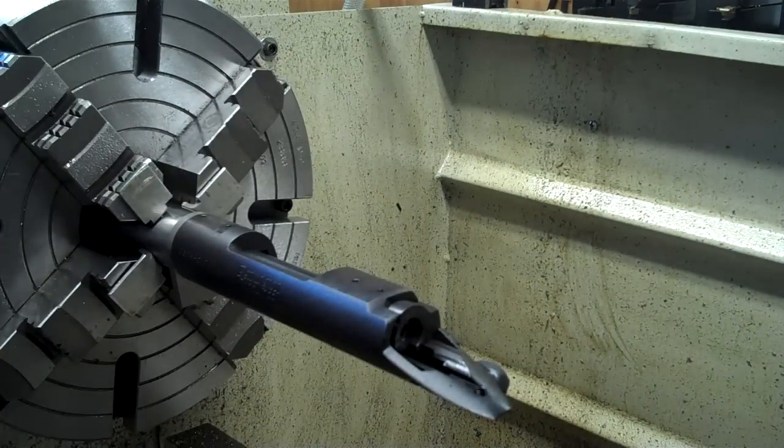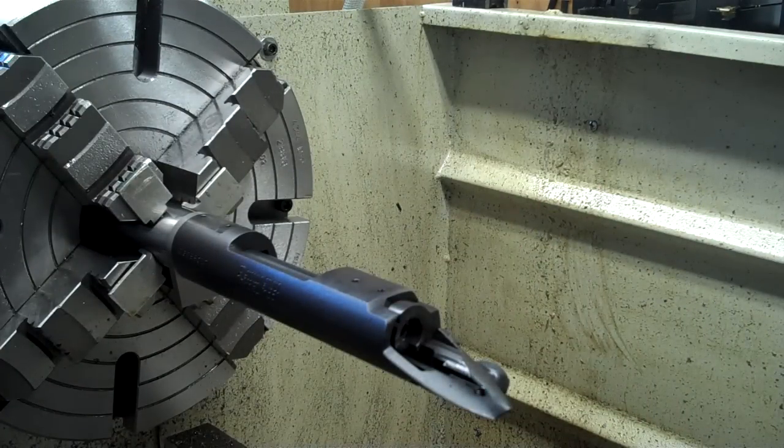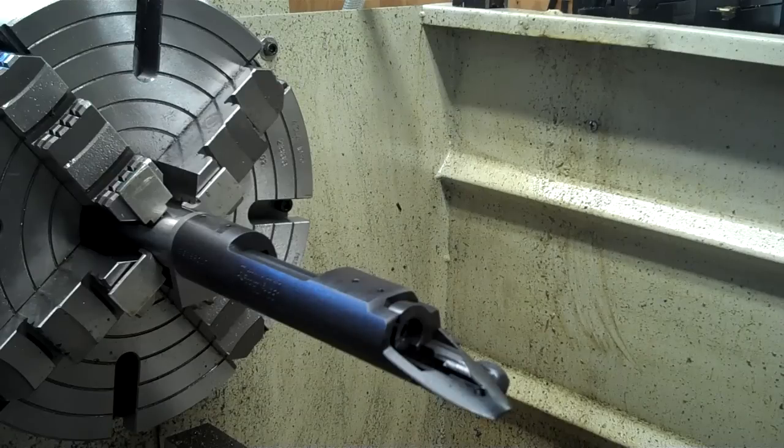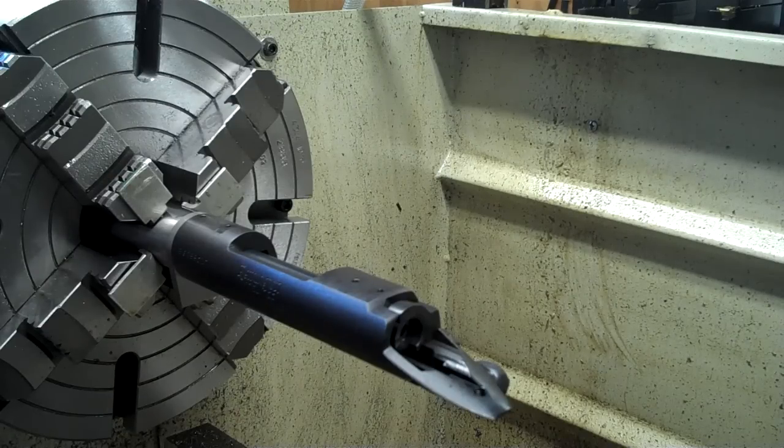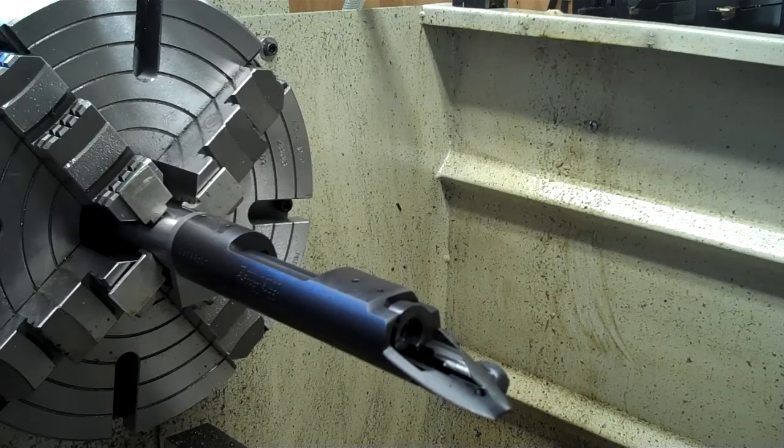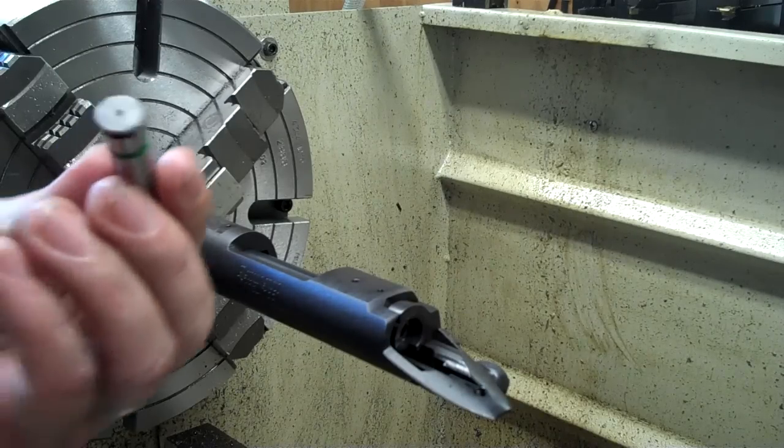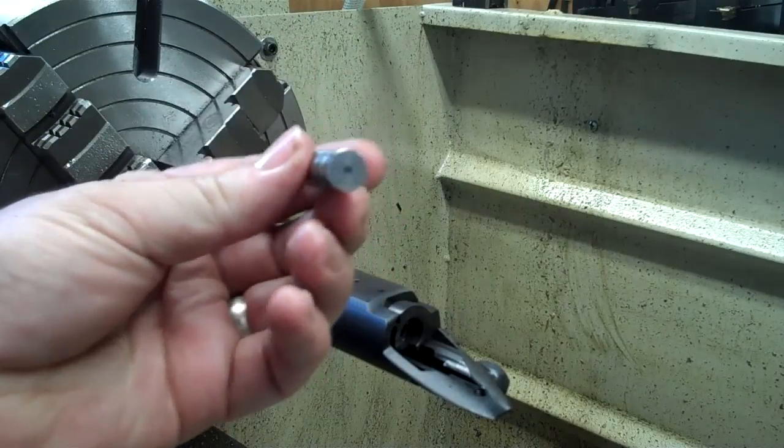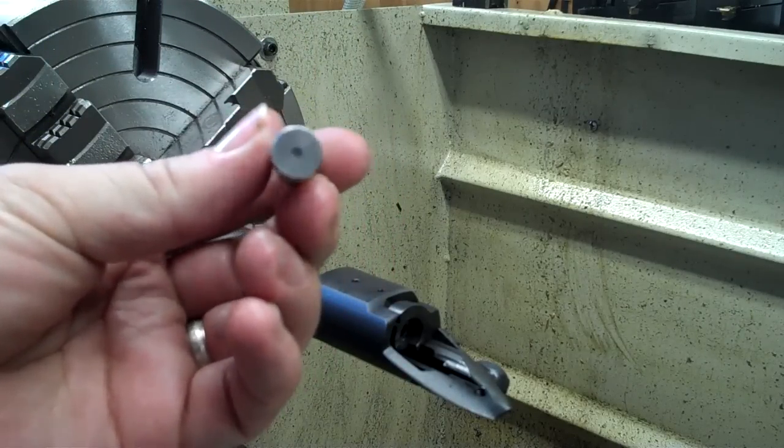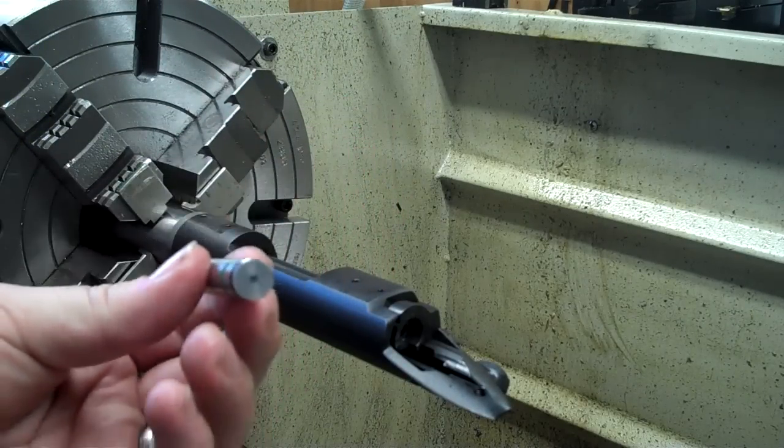Here's the bolt. And we take our headspace gauge. I've already applied a piece of tape to the back of this gauge which is making it a no-go gauge.